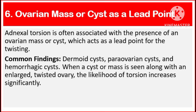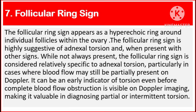Number 6: Ovarian mass or cyst as a lead point. Adnexal torsion is often associated with the presence of an ovarian mass or cyst, which acts as a lead point for the twisting. Common findings include dermoid cysts, para-ovarian cysts, and hemorrhagic cysts. When a cyst or mass is seen along with an enlarged, twisted ovary, the likelihood of torsion increases significantly.